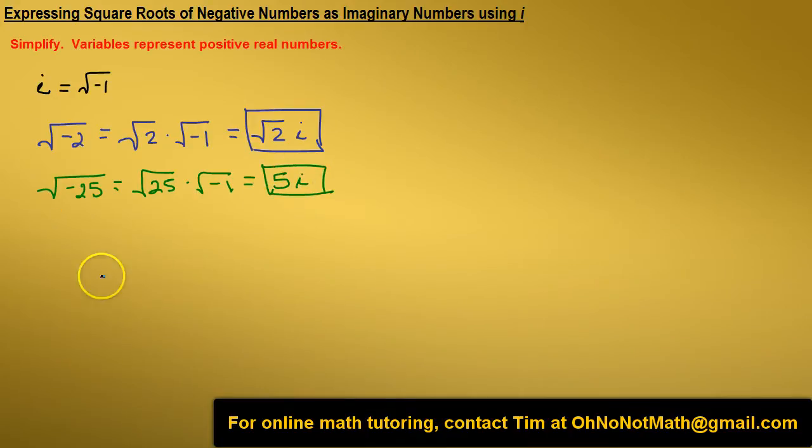One more example. The square root of negative a to the third b to the fourth. That equals the square root of a to the third b to the fourth times the square root of negative 1.